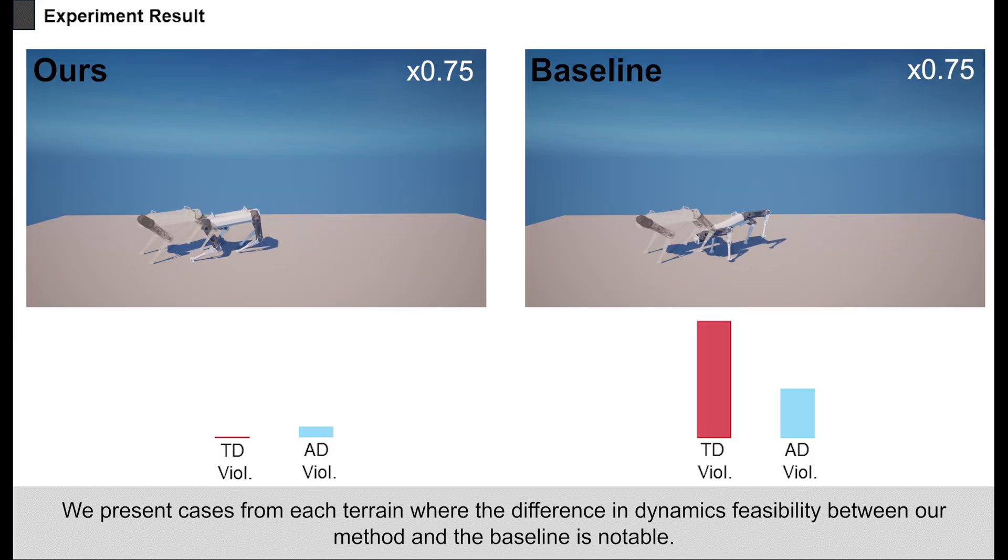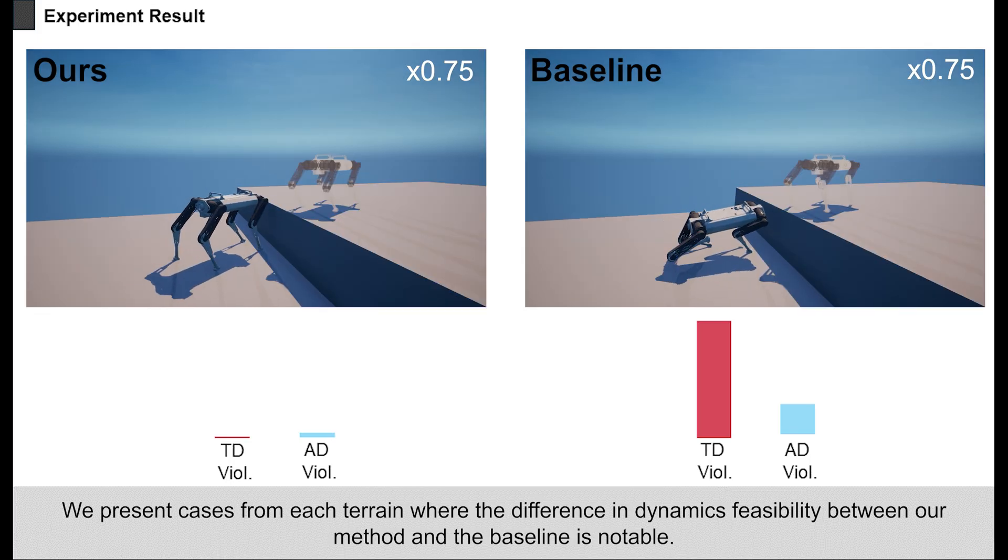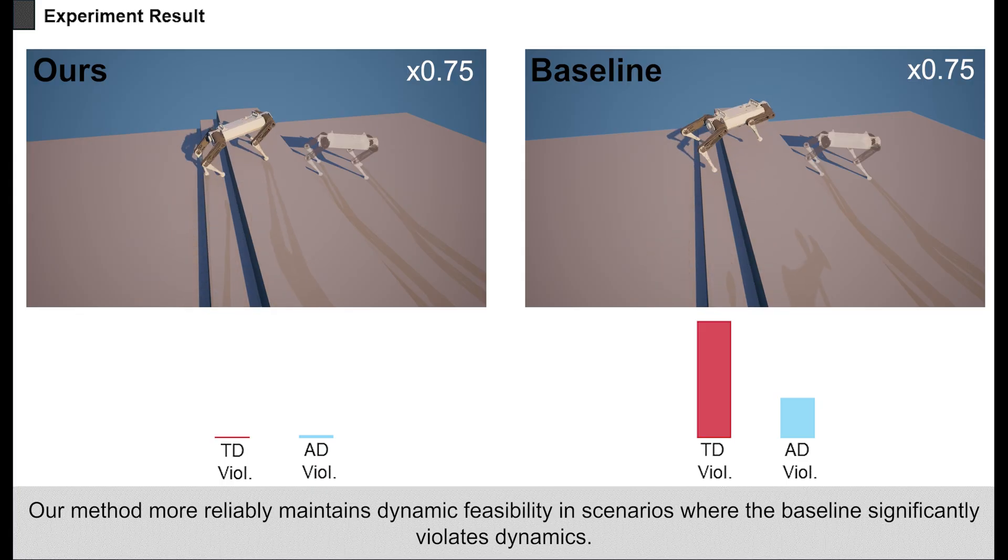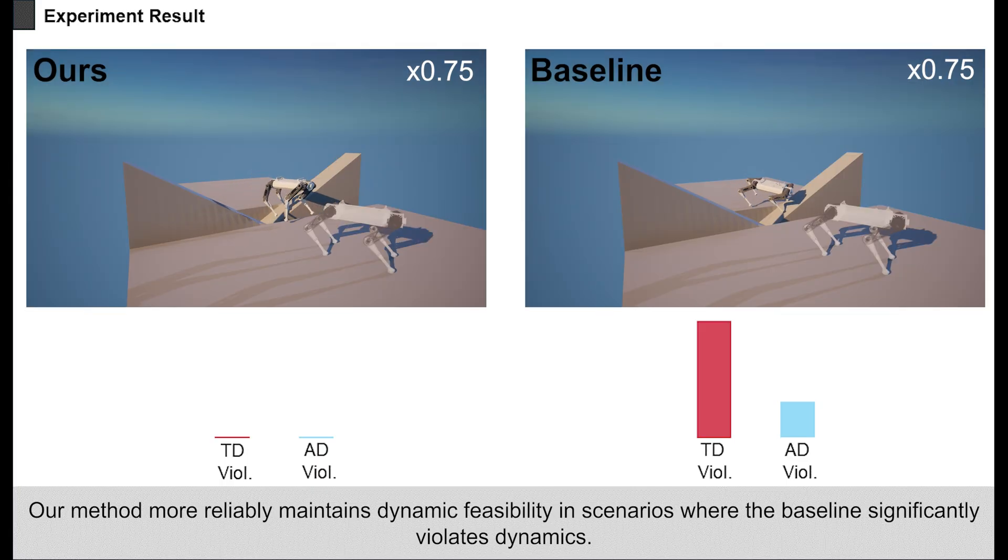We present cases from each terrain where the difference in dynamics feasibility between our method and the baseline is notable. Our method more reliably maintains dynamic feasibility in scenarios where the baseline significantly violates dynamics.